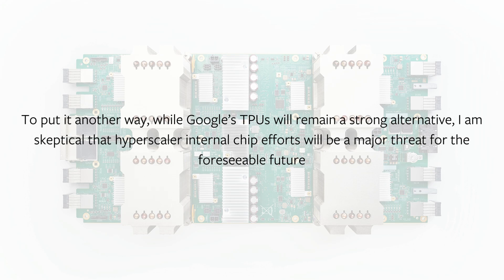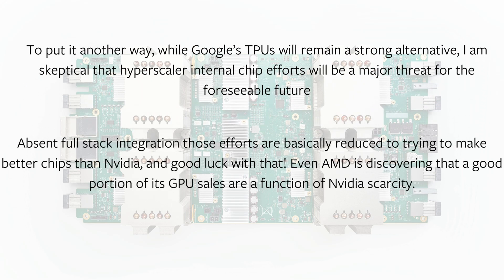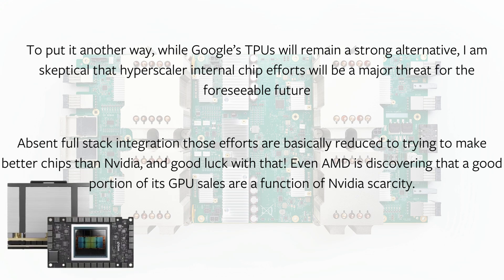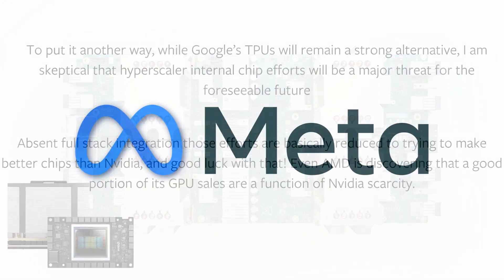I suspect that the only way to overcome this performance advantage, at least in the near term, will be through true vertical integration à la Google. While Google's TPUs will remain a strong alternative, I am skeptical that hyperscaler internal chip efforts will be a major threat for the foreseeable future. Absent full-stack integration, those efforts are basically reduced to trying to make a better chip than NVIDIA — and good luck with that. Even AMD is discovering that a good portion of its GPU sales are a function of NVIDIA scarcity.